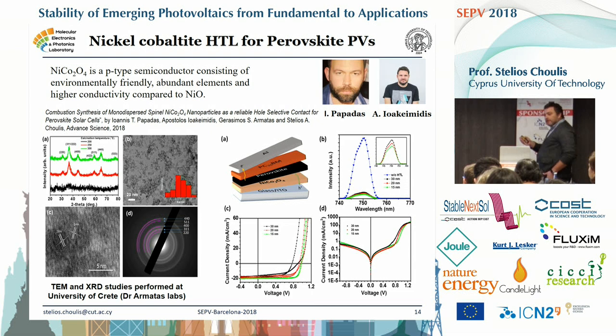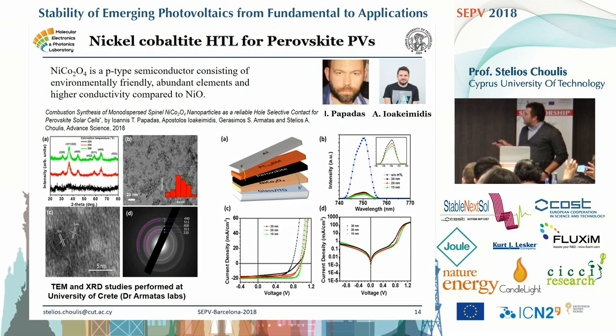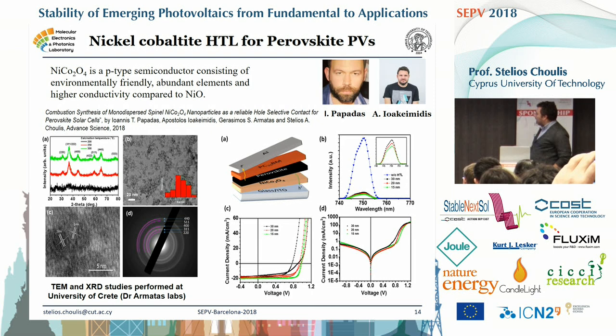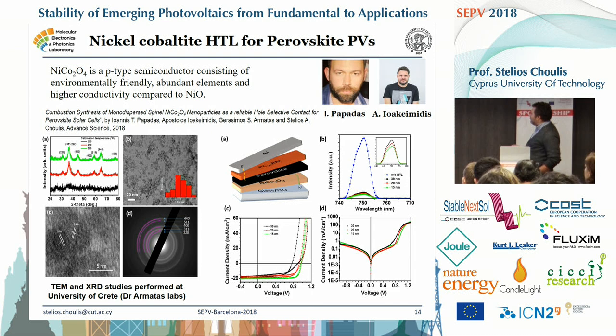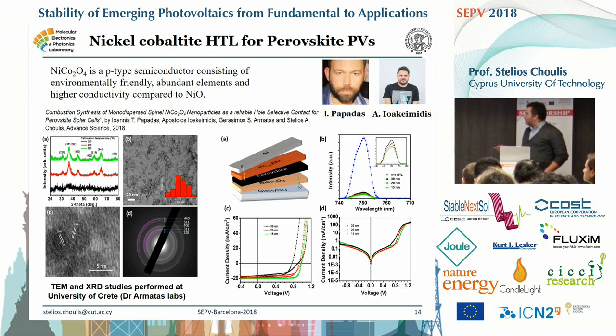In order to make the metal oxide thicker, we tried nickel cobaltide as a hole-transporting layer — a new material developed by Yanis. He made a combustion synthesis, and the nickel cobaltide material has at least one order of magnitude higher conductivity than nickel oxide. This is very new — a paper is accepted in Advanced Science. You can make this material at low temperatures, crystallizing at around 250–300°C, with very nice particle distributions around 4 nanometers. This time we make devices from 15 to 30 nanometers thickness, and the performance is around 15.5% with no hysteresis.